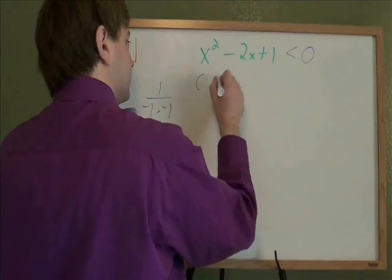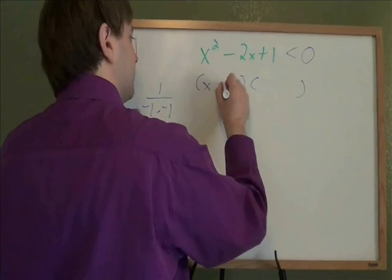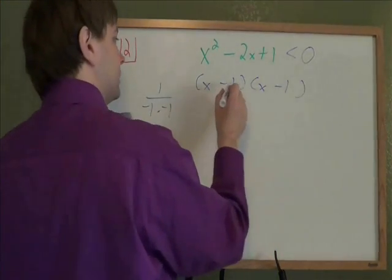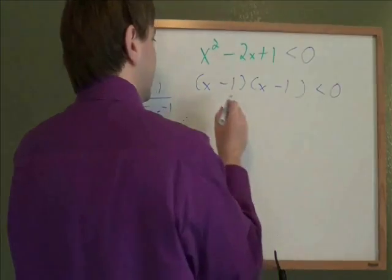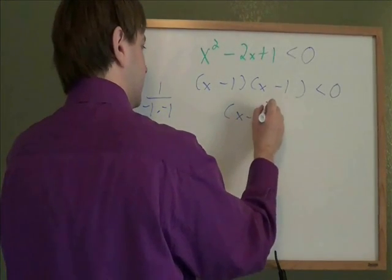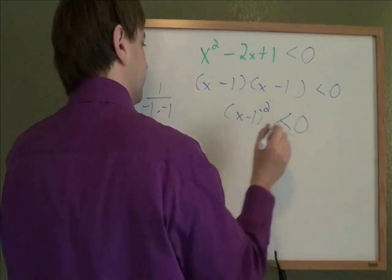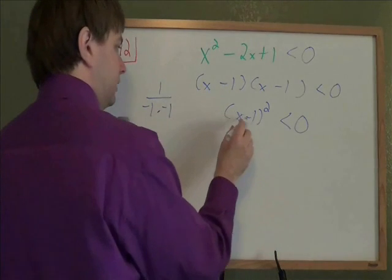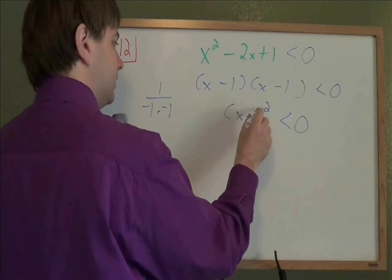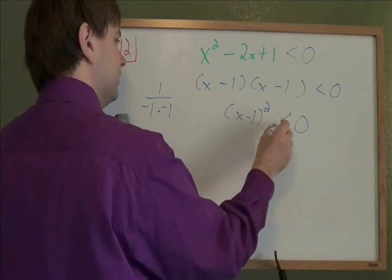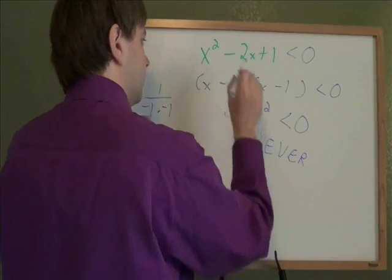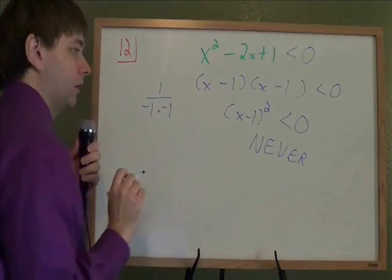So this factors to be x minus 1, x minus 1. So we have x minus 1, x minus 1 is less than zero. One way to rewrite this is as x minus 1 quantity squared. And is a square number ever negative? No. Anytime you square a number, you get a positive or at least zero. So this never happens. There are no numbers that make this less than zero.